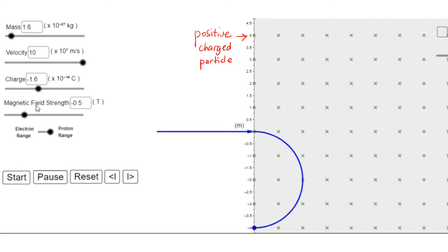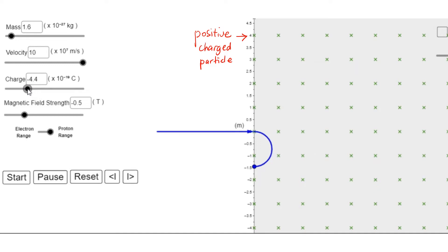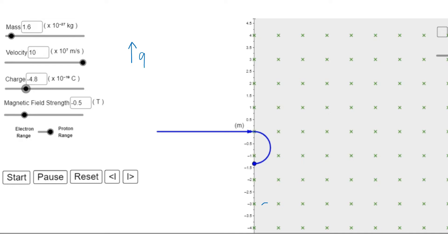If we increase the magnitude of the negative charge, the particle will deflect more. The particle is actually moving in circular motion once it enters the magnetic field. By looking at the size of the circular path, increasing the magnitude of charge shows that the magnetic force is getting stronger. We can conclude that if you increase the magnitude of charge, the magnetic force on the particle will become stronger.